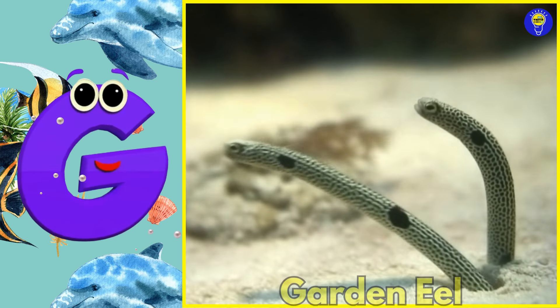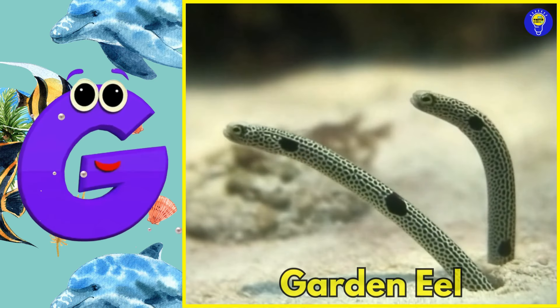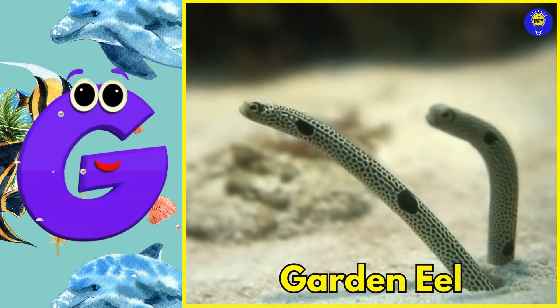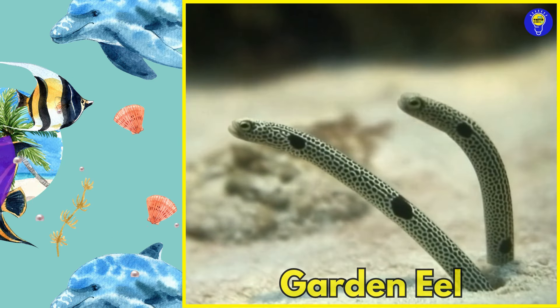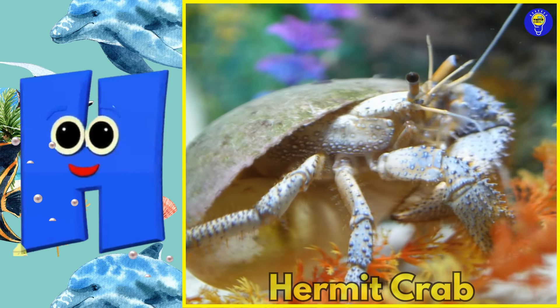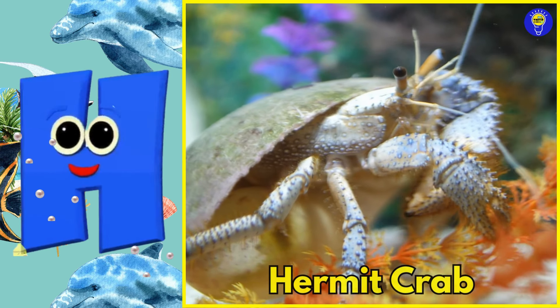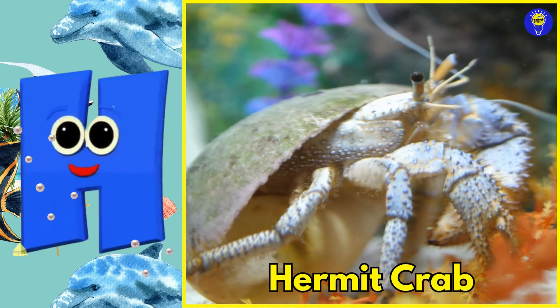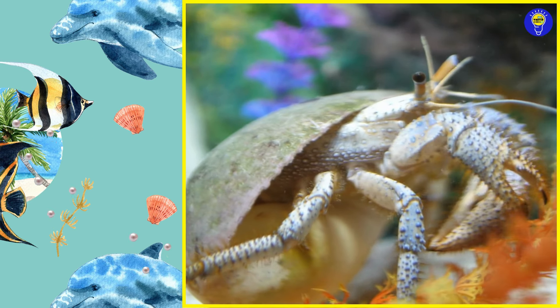G is for garden eel. Guh, garden eel. H is for hermit crab. Ha, hermit crab.